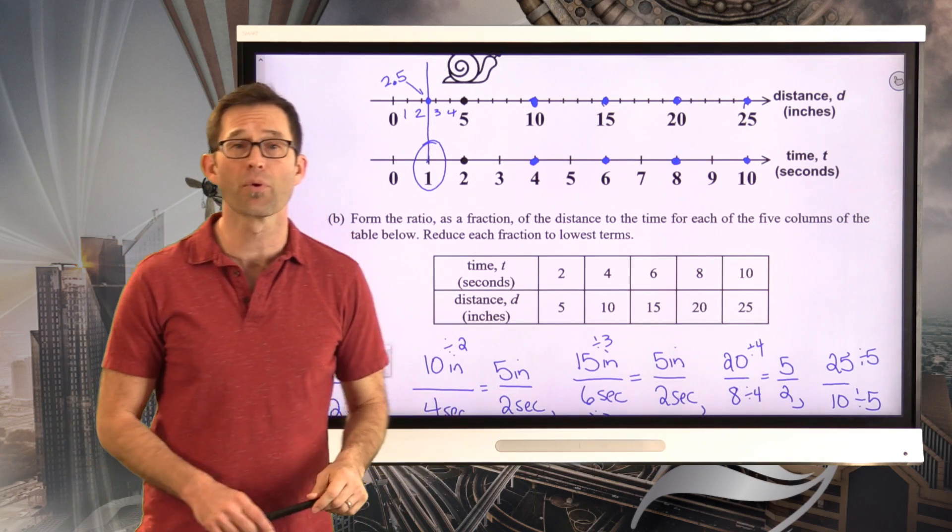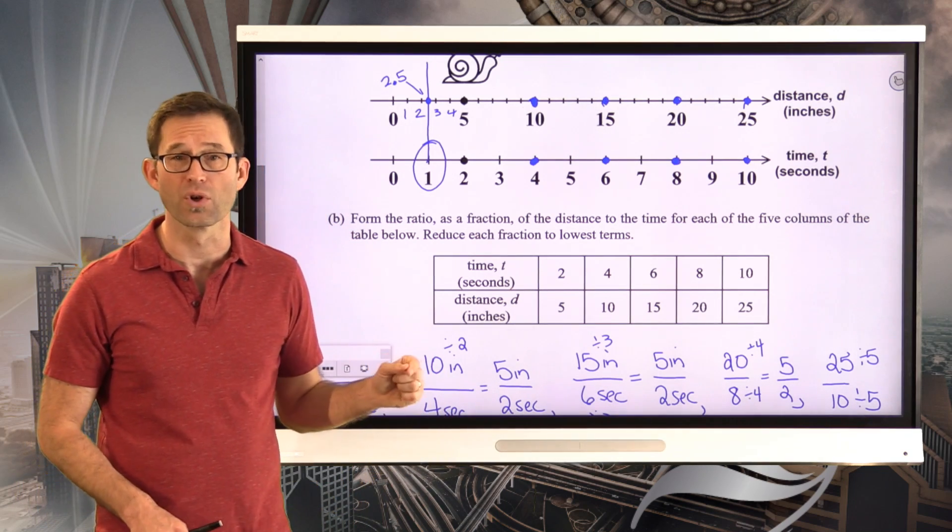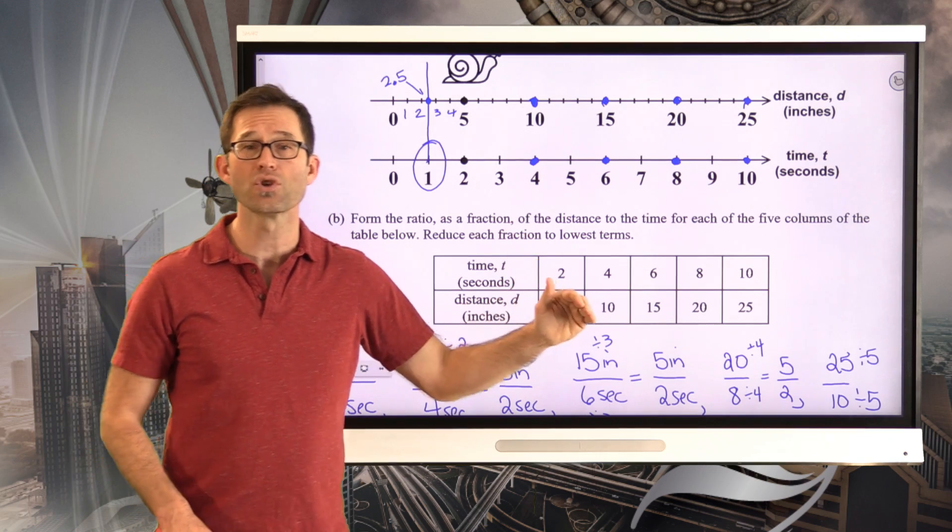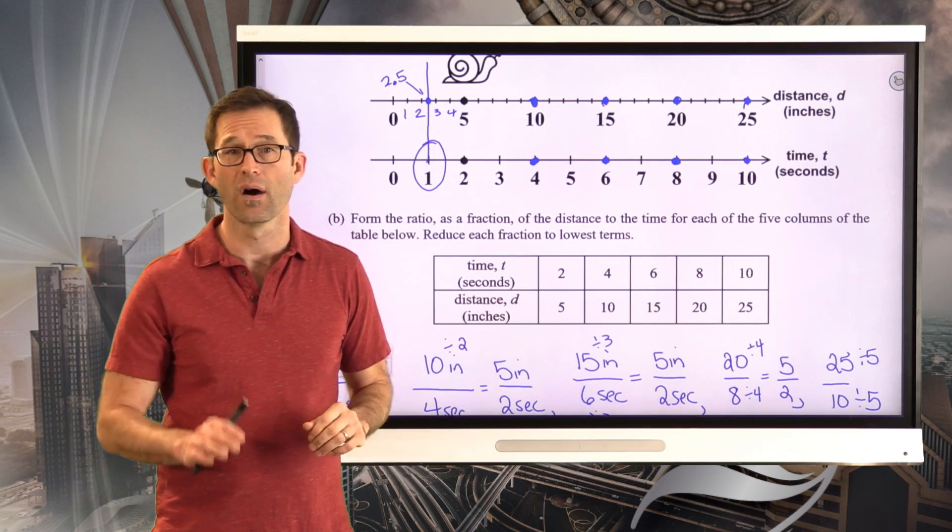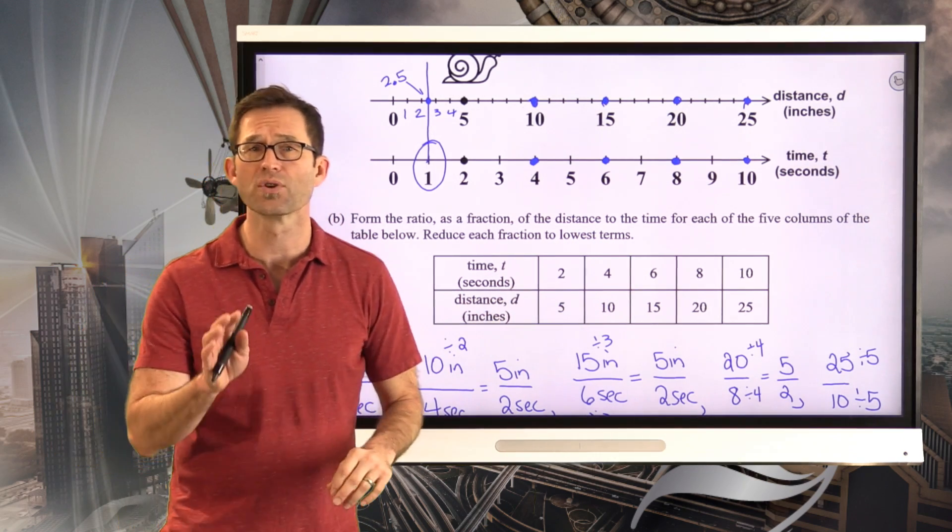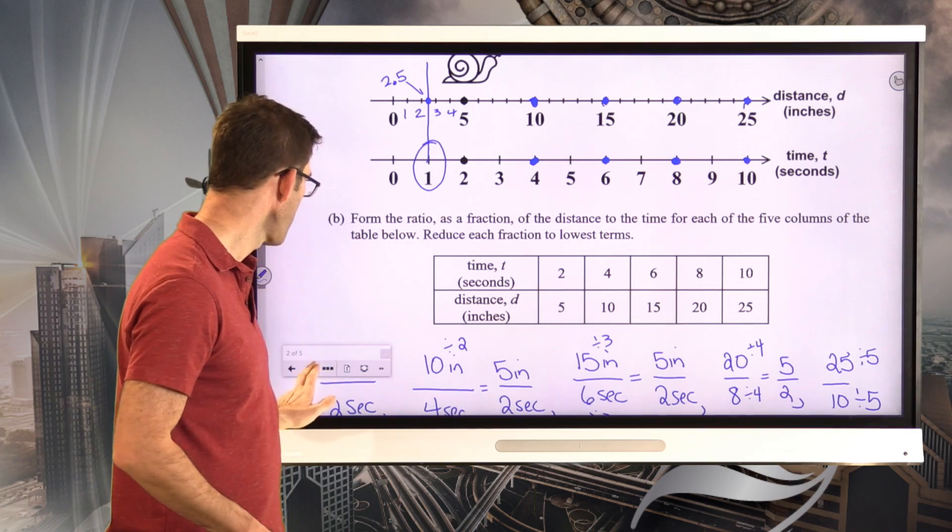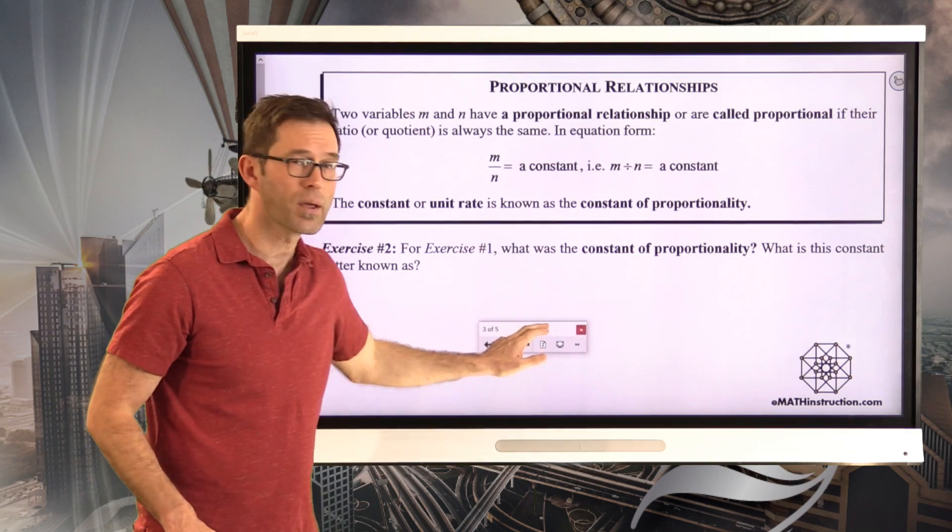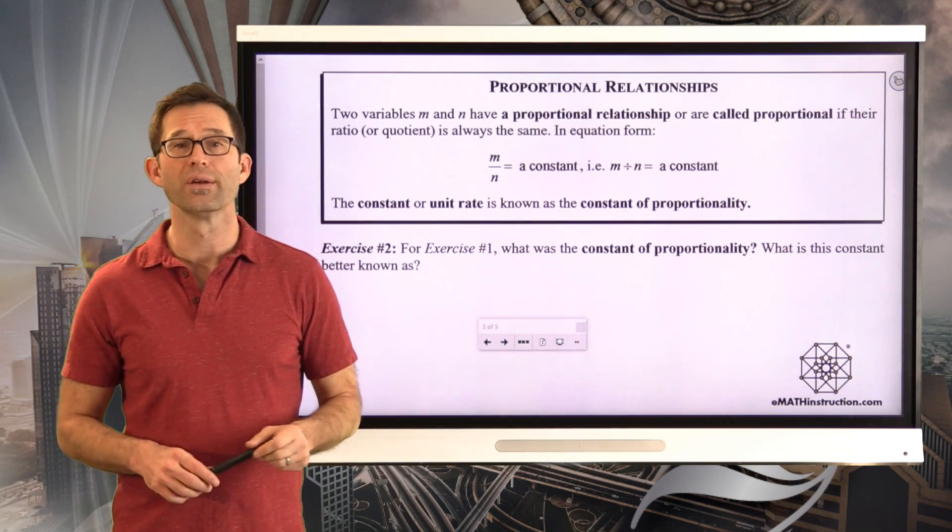These two variables are in proportion, or are proportional. Every time we do the ratio of one to the other, it's constant. Proportional relationships are extremely important in mathematics. So, let's talk about them a little bit more.